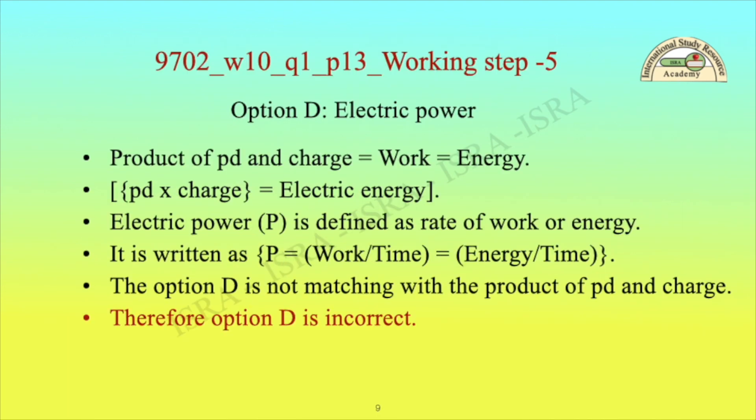Working step 5 — Option D, electric power: The product of PD and charge equals work, or equals energy. Electric power P is defined as the rate of work or rate of energy, written as P = work/time or energy/time. Option D does not match the product of PD and charge, therefore option D is incorrect.